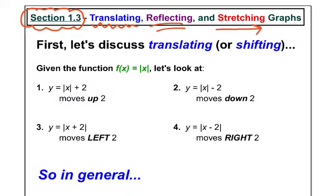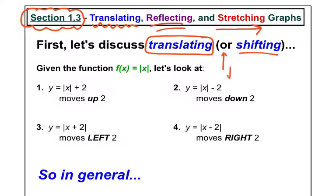So here's what's going to happen. You already made some flashcards, hopefully, from the recent homework, but let's actually dig into it and find out why what's happening is happening. So let's first talk about translating — another word is shifting — which just means either moving up or down, or left or right.